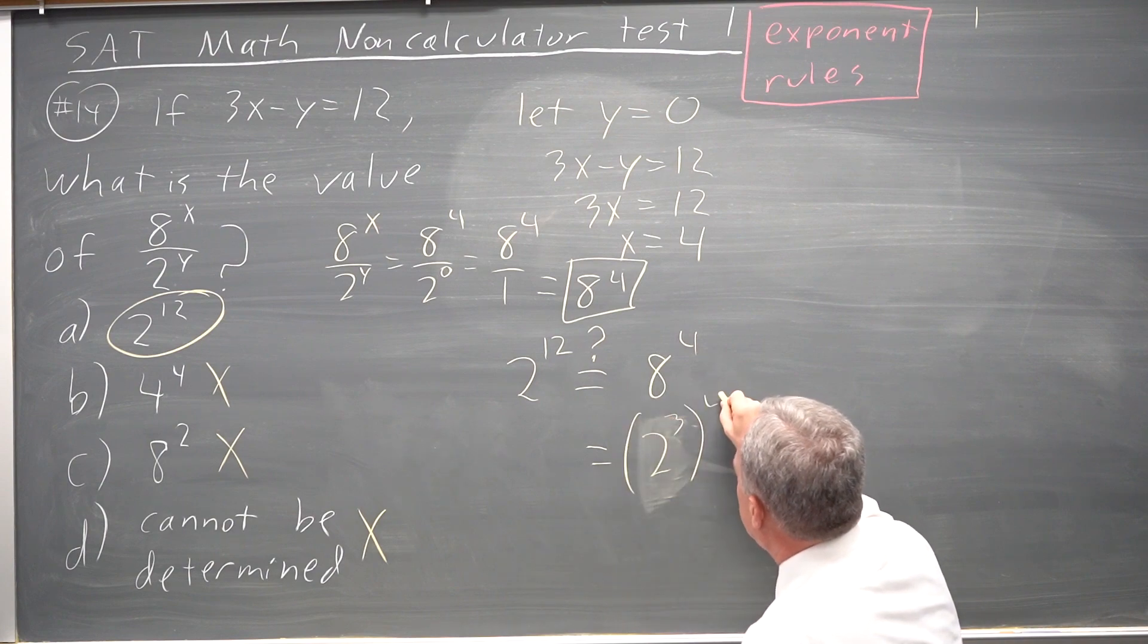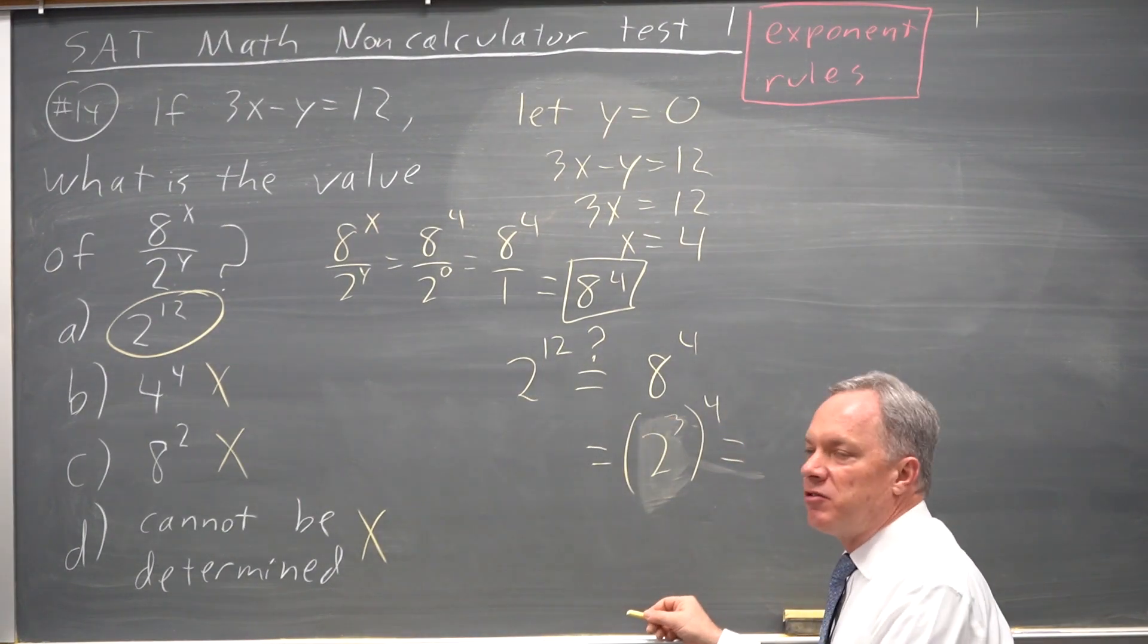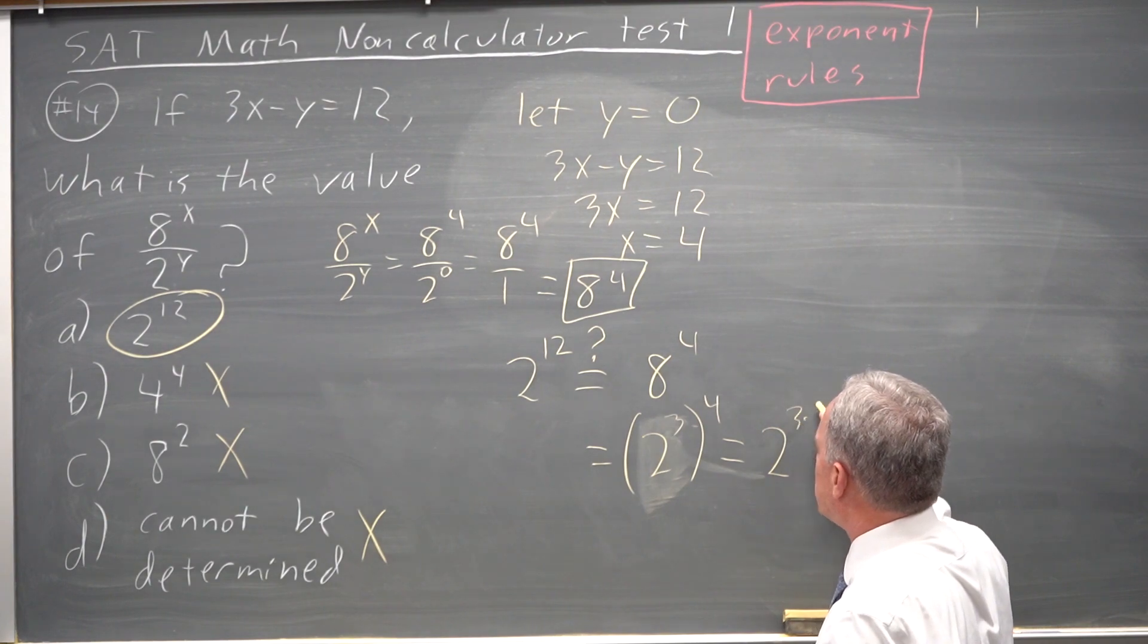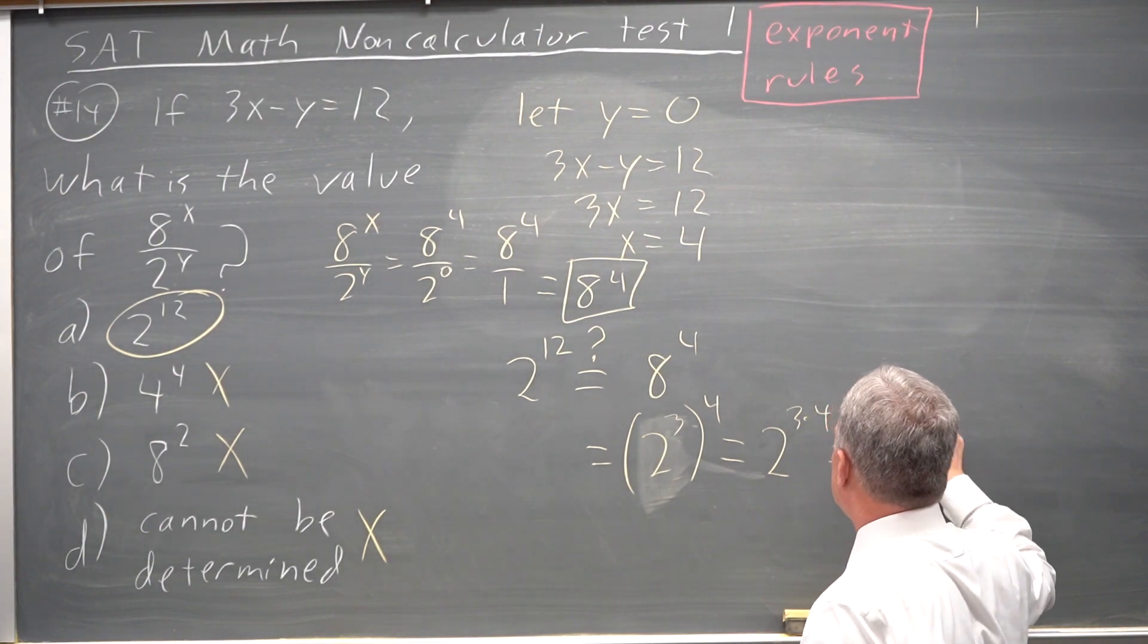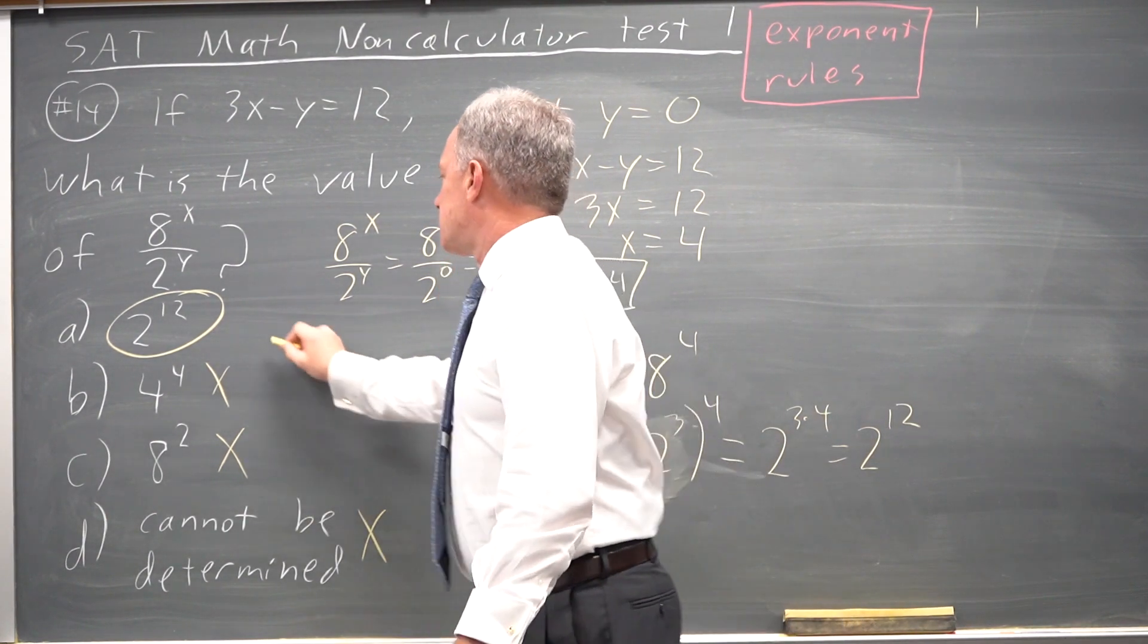And power of power, you multiply exponents, so that is 2 to the 3 times 4 is 2 to the 12. They do match, so this is the correct answer.